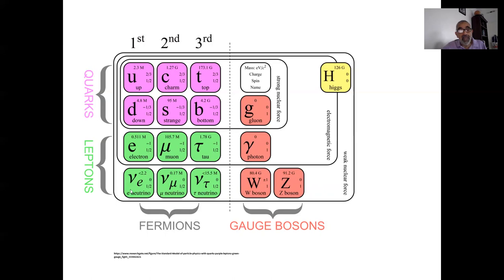Neutrinos are given off as one thing changes into another — for example, radioactive decay, and neutrons changing into protons and so forth. We'll talk about that more later. But it turns out that even though there are four fundamental particles, nature was a bit stranger — there are actually three families of very similar fundamental particles.